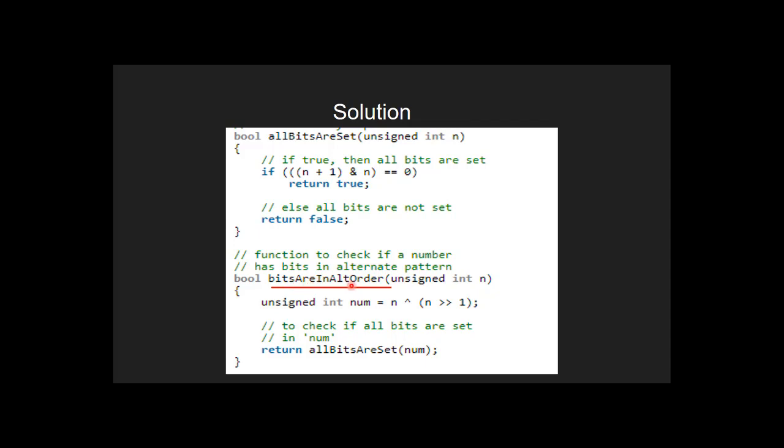Inside the bitsAreInAltOrder function, we do right shift of n by 1 and find the XOR with n, and store the result in num. Then we call the function allBitsAreSet to check if all the bits in num are set or not.